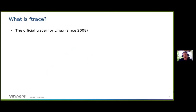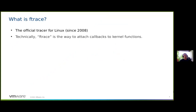So first, what is Ftrace? Ftrace is, quote unquote, the official tracer of the Linux kernel. It entered the Linux kernel in 2008. Officially, Ftrace is the way that you can hook to any function within the kernel — you can attach to it and do something with that function. The infrastructure to hook to functions in the kernel is technically what Ftrace is, and one of its major features is called the function tracer, where you can trace all functions happening inside the kernel.